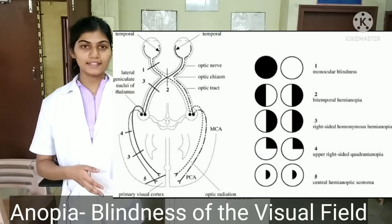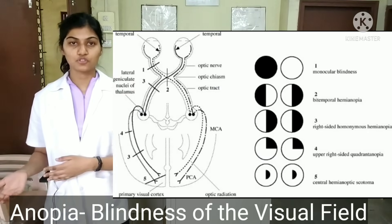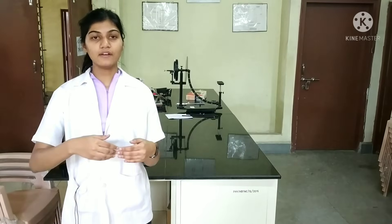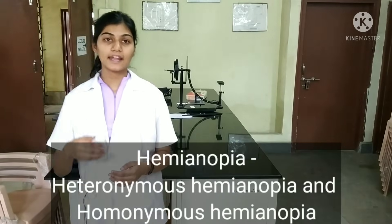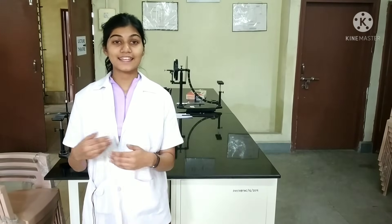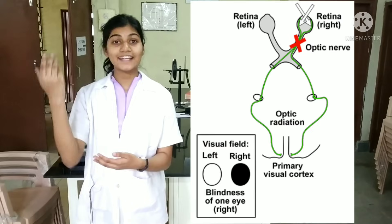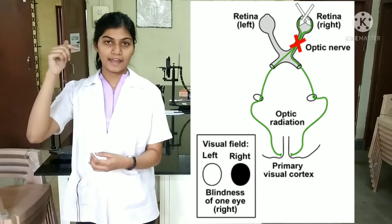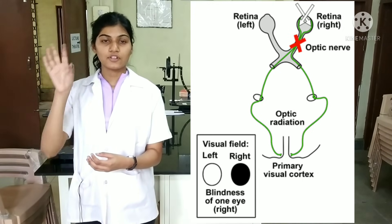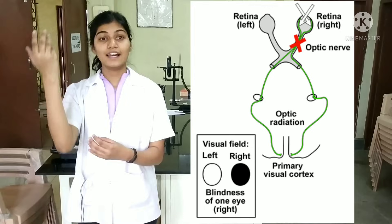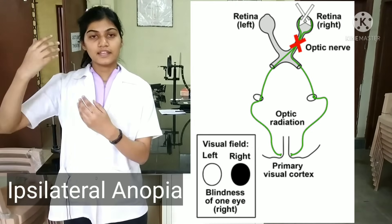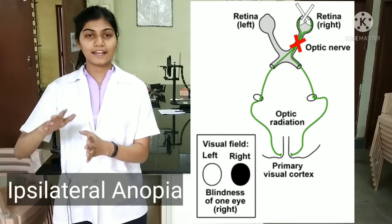We also have anopia, that is blindness of the visual field. We can have hemi-anopia or complete anopia, and in hemi-anopia there is heteronymous anopia and homonymous anopia. If there is a lesion in the right optic nerve, the fibers coming to the right eye will get blocked, resulting in complete blindness of the visual field for the right eye. Hence, we call it ipsilateral complete anopia, because it is on the same side.